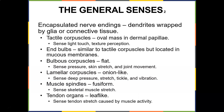Encapsulated nerve endings are dendrites wrapped by glia or connective tissue. Tactile corpuscles are oval masses that sense light touch, texture, and perception. End bulbs are similar to tactile corpuscles but located in mucous membranes. Bulbous corpuscles are flat and sense pressure, skin stretch, and joint movement. Lamellar corpuscles are onion-like and sense deep pressure, stretch, and tickling. Muscle spindles are fusiform and sense stretch. Tendon organs are leaf-like and sense tendon stretch caused by muscle activity.